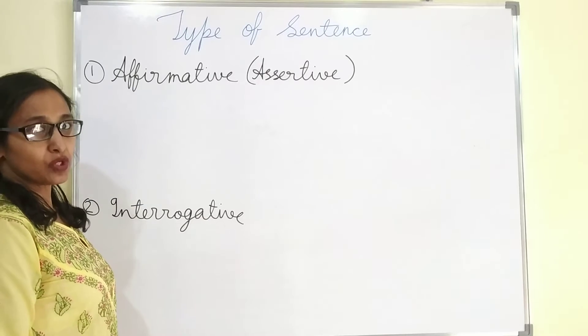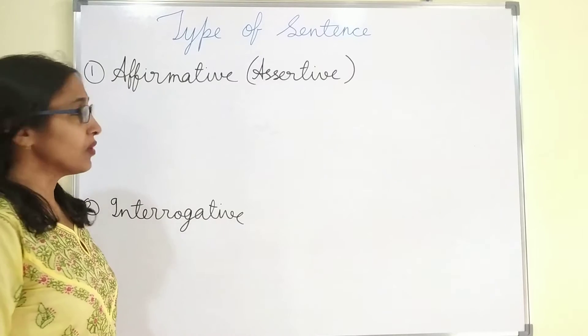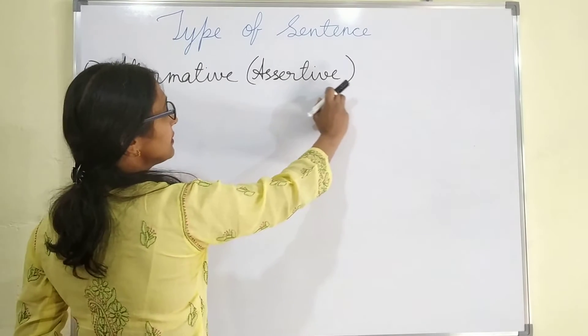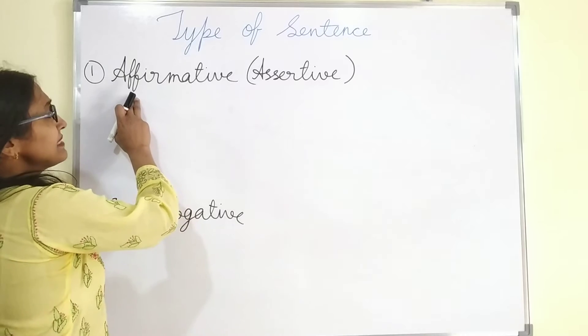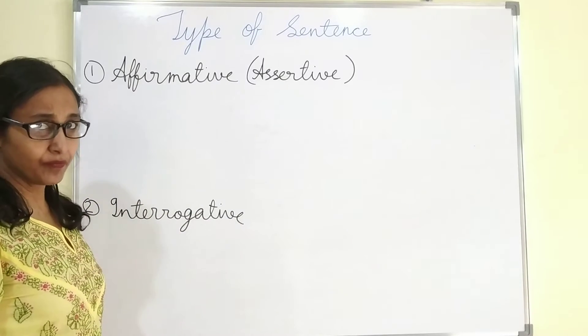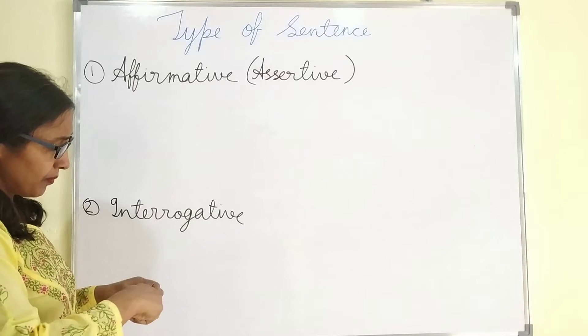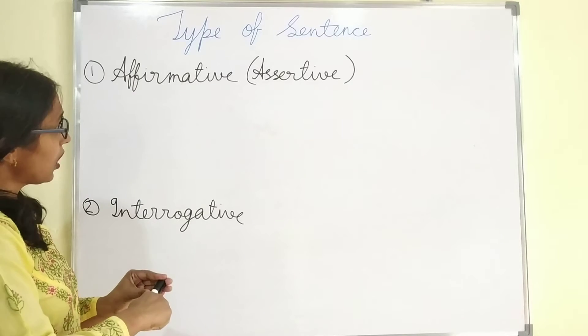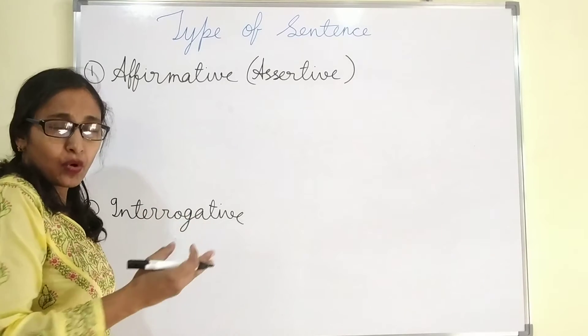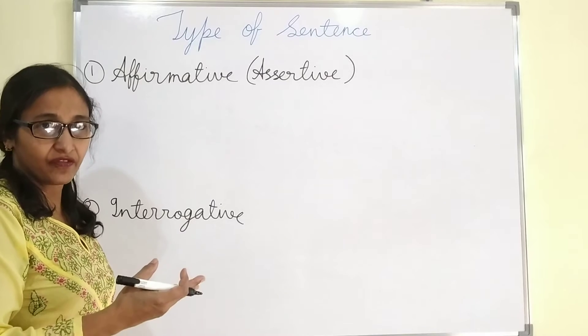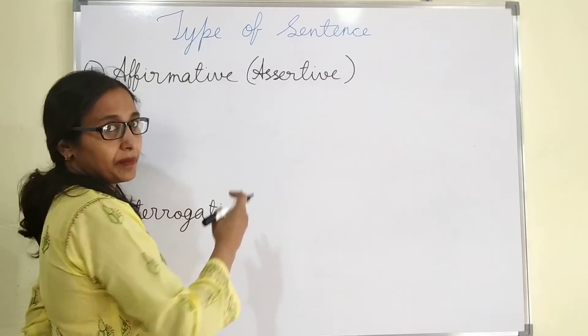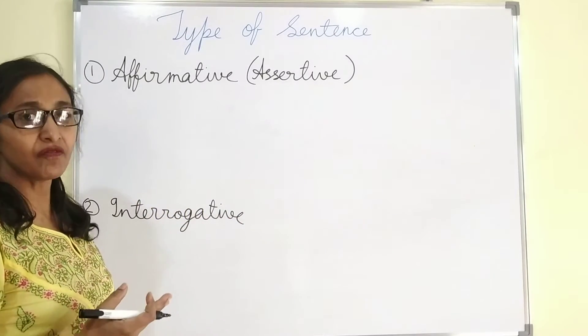There are five types of sentences. First is affirmative sentence, that is also called assertive sentence. These assertive sentences are also called positive sentence. Otherwise, you can say, jinsay humko kuch kaam ho raha hai in positive way, uske baare mein pata chalta hai. They are called affirmative sentence. Means something happening in positive way.